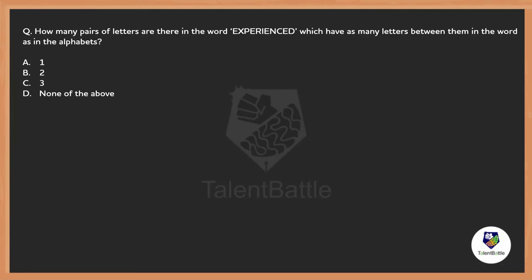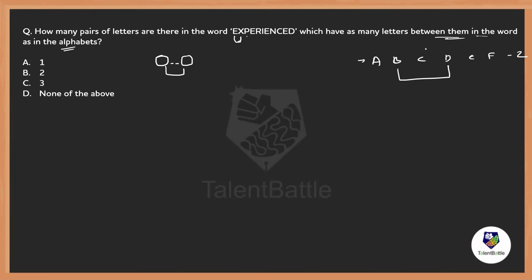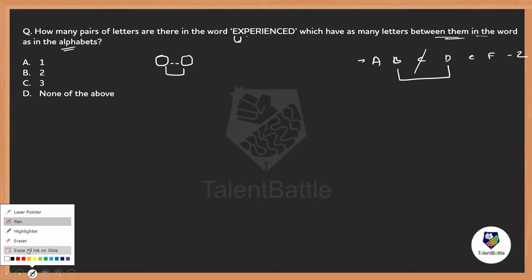How many pairs of letters are there in the word 'experienced' which have as many letters between them in the word as in the alphabet? I totally understand that majority of you did not understand the question — it is such a tricky statement. How many pairs of letters? A pair consists of two letters. How many such pairs of two letters which have as many letters between them in this word as in the alphabet? For example, let us say B and D — in between B and D in the alphabet, how many letters are there? One letter. Similarly in the given question also, you should have the same number of letters.